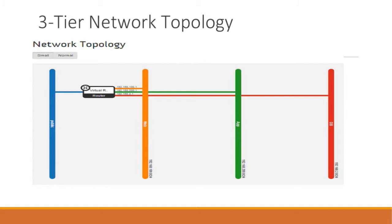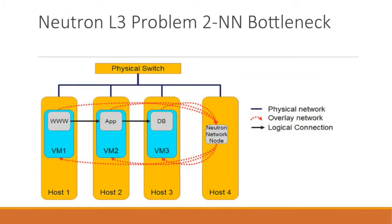Looking at this diagram, we have the three-tier application — web, app, and database — with the network node to the right. Before any tier can talk to another tier, traffic has to go all the way to the network node and then come back down to the destination. Even if both instances are on the same compute node, traffic still has to go out to the network node and back. You may not see it as a serious problem now, but the next slide illustrates why it is.